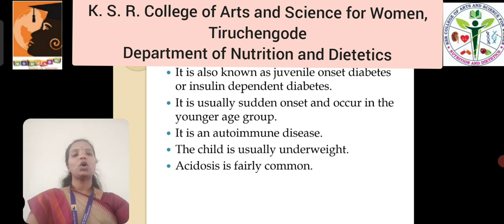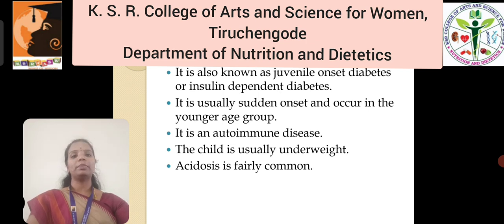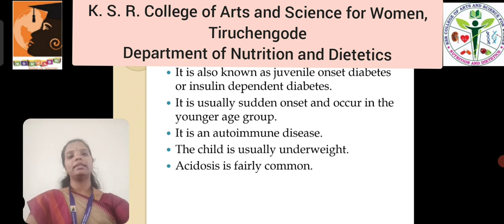There are commonly two types of diabetes mellitus, and a third type which occurs during pregnancy, also known as gestational diabetes. Type 1 diabetes is usually of sudden onset and occurs in the younger age group. It is an autoimmune disease, and the child is usually observed as underweight. Acidosis is fairly common in this type.